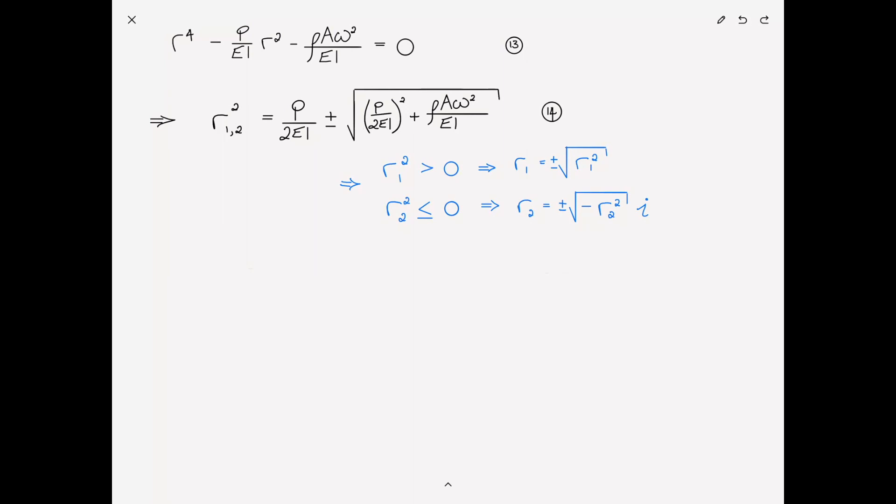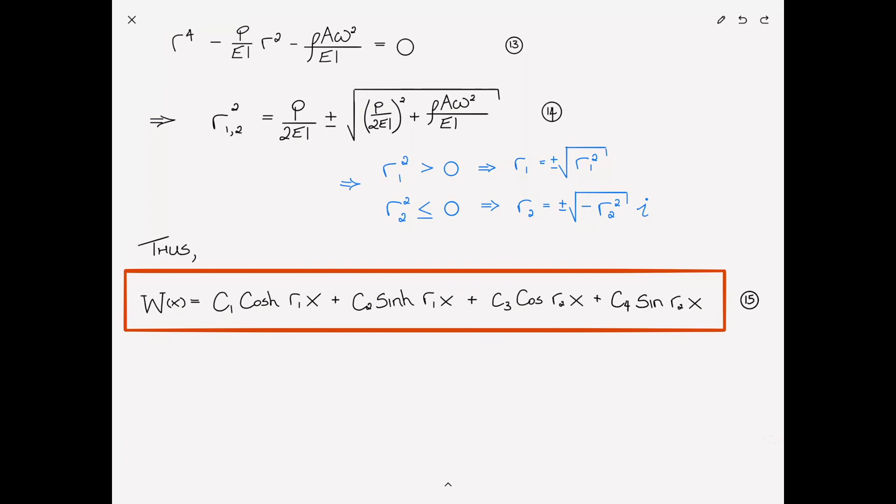Now we're done. The last thing I need to remind you is the two positive roots give rise to sinh and cosh, the hyperbolic sine and cosine functions, while the imaginary roots give rise to the cosine and sine functions. Thus, we can write the shape function capital W of X as c1 cosh R1X plus c2 sinh R1X plus c3 cosine R2X plus c4 sine R2X. We'll number this equation 15 and put a red box around it. We have four unknowns, clearly we're going to need four boundary conditions, that's two at each end of the beam, in order to solve for our four constants.